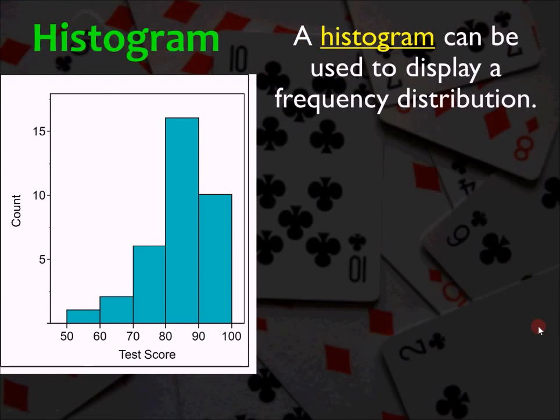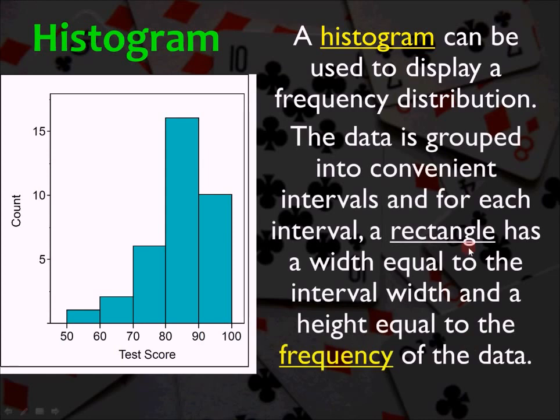The next way to display data, and this is mainly single variable data, is called a histogram. And what you see here is a group of intervals, equally wide. And then they tell you, by the height of the rectangle, how many times each score appeared in that interval. So the data is grouped into convenient intervals, and for each interval, a rectangle has a width equal to the interval width, and a height equal to the frequency of the data. So we can tell there were more students that got scores between 80 and 90 than between 90 and 100.